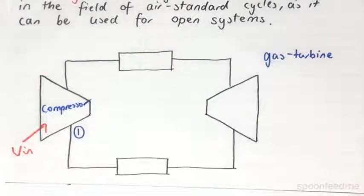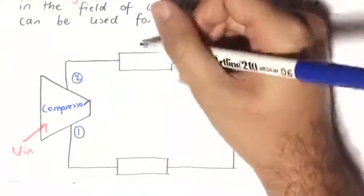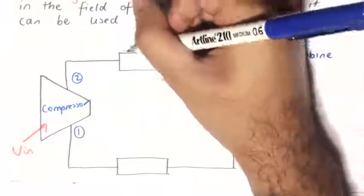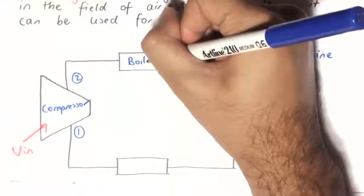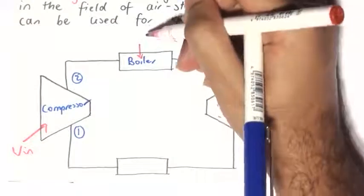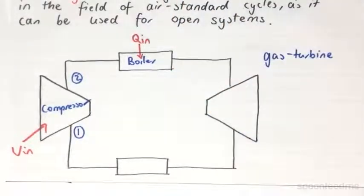Then, after it hits the compressor, it goes to state 2, and then there's some sort of a heat reservoir over here. And maybe you can call it a boiler if you like. But what happens over here is some heat is inserted into the system.